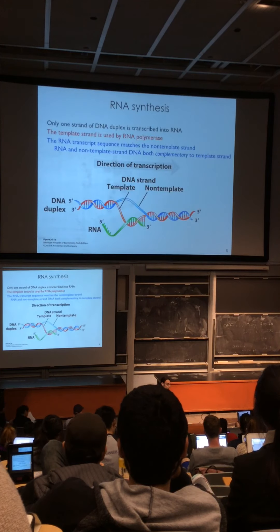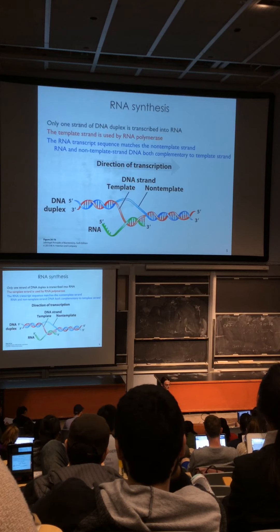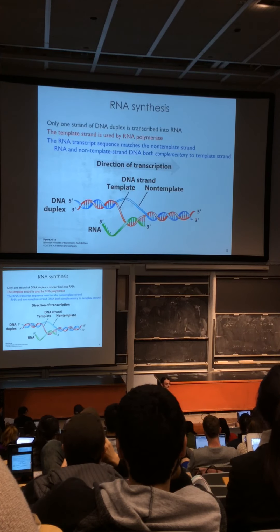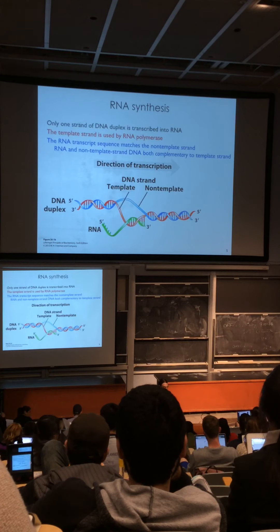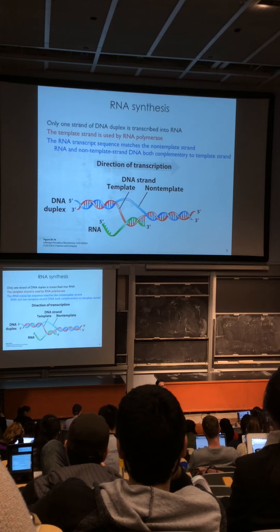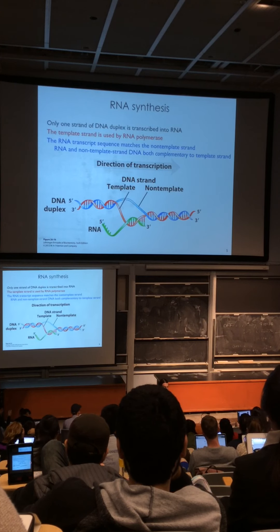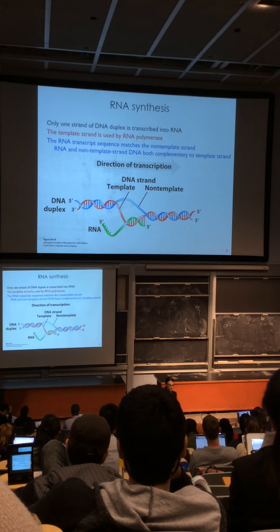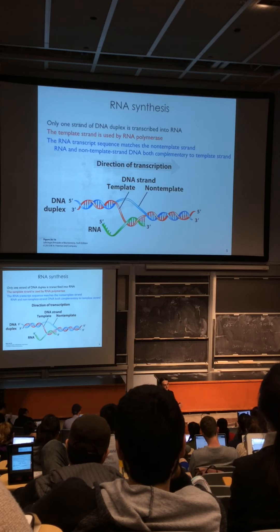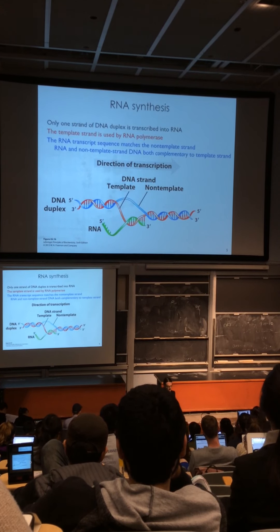A bit of nomenclature: DNA replication copies both strands completely, but RNA synthesis is asymmetric—only one strand in the DNA duplex is transcribed into RNA. The template strand is used by RNA polymerase to make the RNA, so the RNA is complementary to it. The non-template DNA strand is also complementary to the template strand, which means the transcript's sequence exactly matches the sequence of the non-template strand.